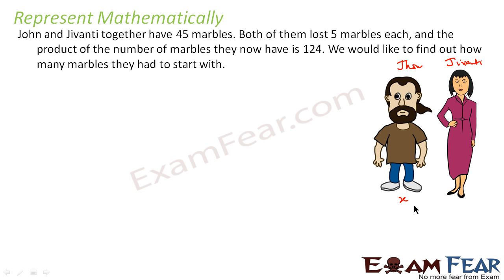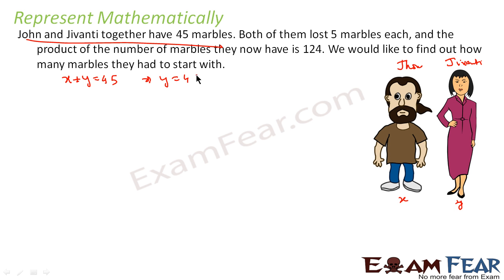If John had x marbles, then Jivanti had y marbles. The first condition says John's marbles plus Jivanti's marbles equals 45, so y = 45 - x. We write 45 - x instead of y to keep everything in one variable, because equations in one variable are easier to solve. So John starts with x marbles and Jivanti starts with 45 - x marbles.